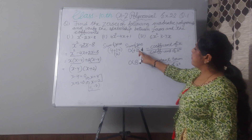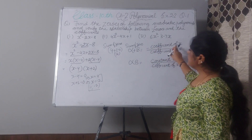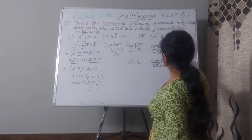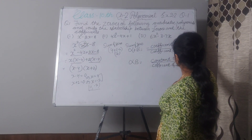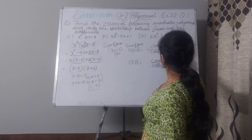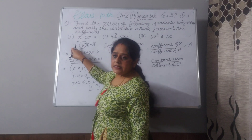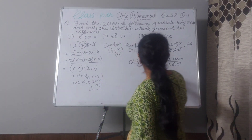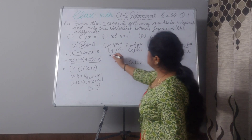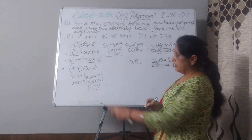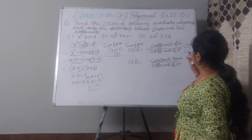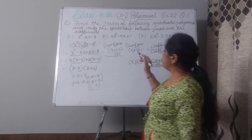According to the formula, coefficient of x is minus 2 and coefficient of x² is 1. So minus (minus 2) divided by 1 — minus and minus gives plus — equals 2. Sum of zeros according to factorization is 2, and according to the coefficient formula is also 2. Now, product of zeros.